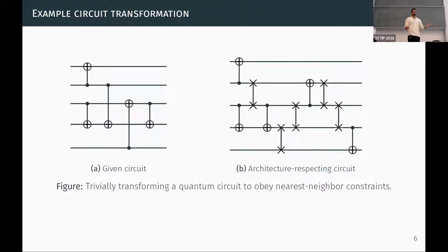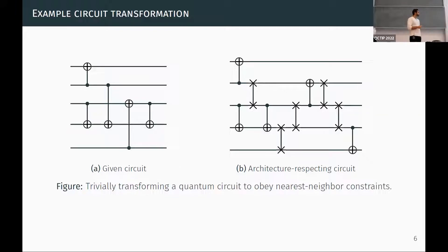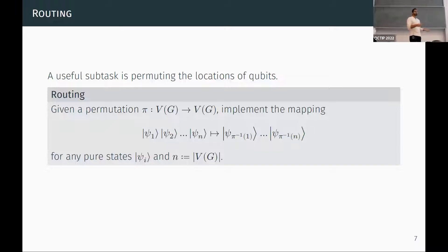Here's an example. On the left is a circuit which doesn't respect nearest-neighbor connectivity — it has two long-range gates between qubits that are far away. A naive approach is to insert swap gates, giving us the circuit on the right, which is entirely local with all gates between neighboring qubits, though we incur a depth overhead. A nice way to think about this as a black-box task is in terms of permuting locations of qubits, which is what we call routing: given a permutation on a graph, implement the mapping that permutes the qubits in that way.